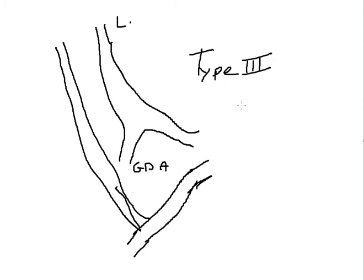Type 2 we are not going to talk about. That is when there is a replaced left hepatic artery off of the left gastric. There are not truly any Whipple procedure considerations with type 2.